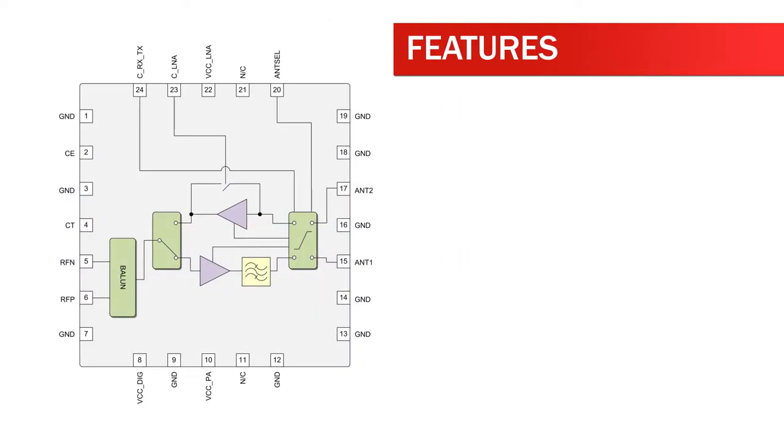Features of the RF 6555 include transmit output power 18 dBm, transmit ICC 70 milliamps, and transmit gain 25 dB.